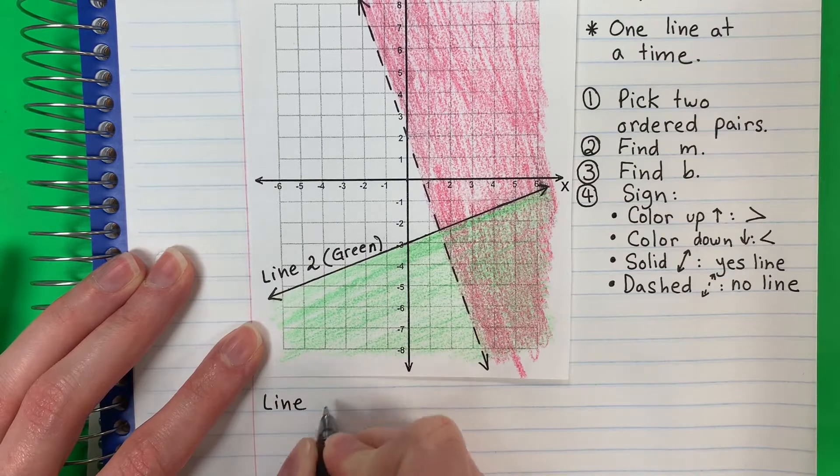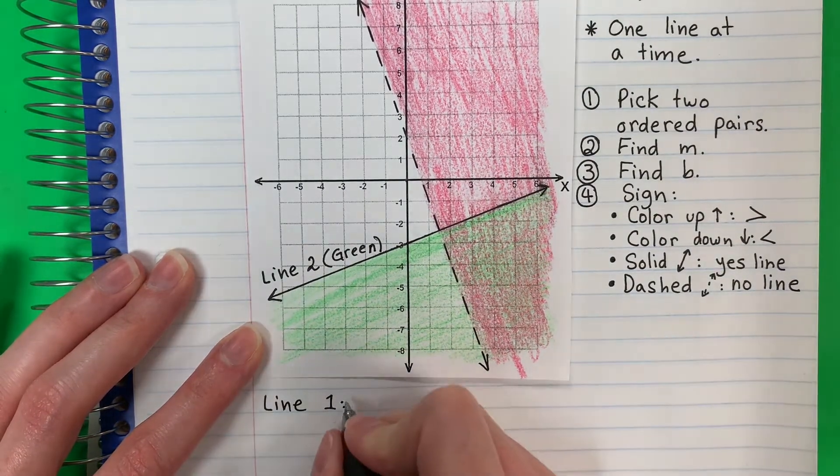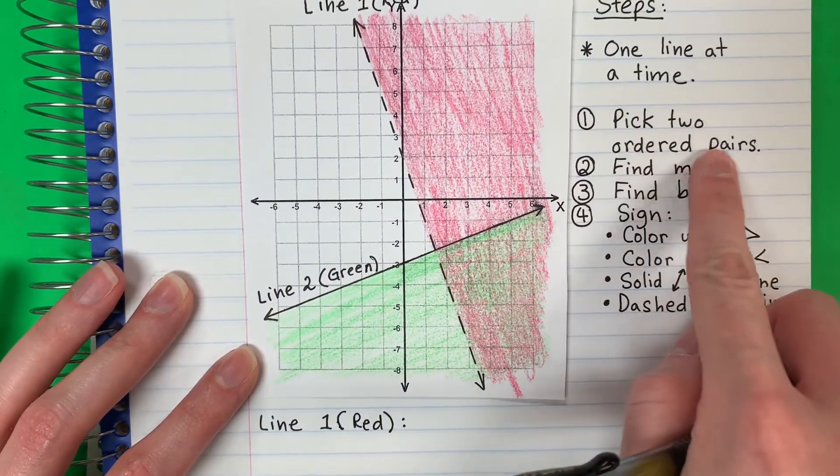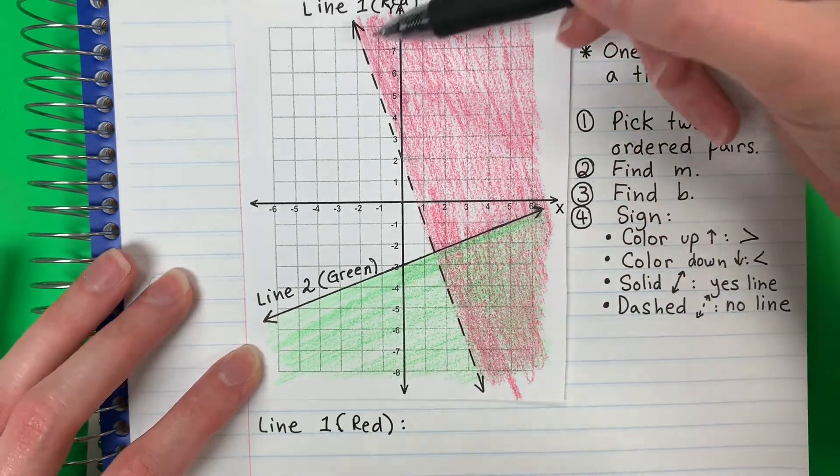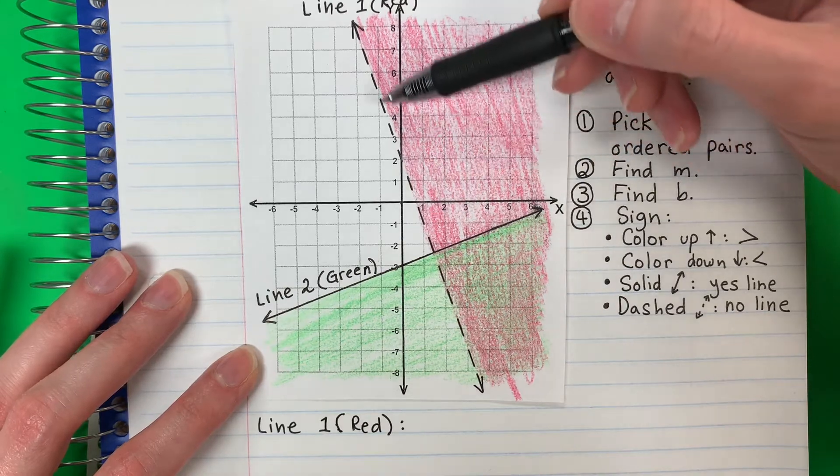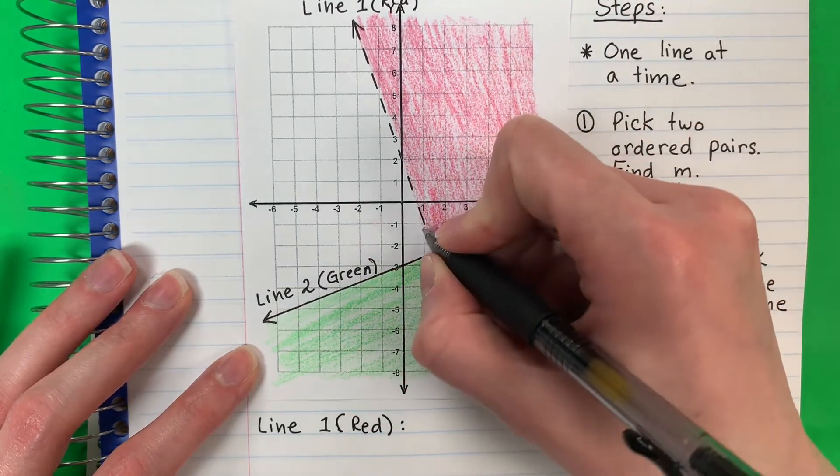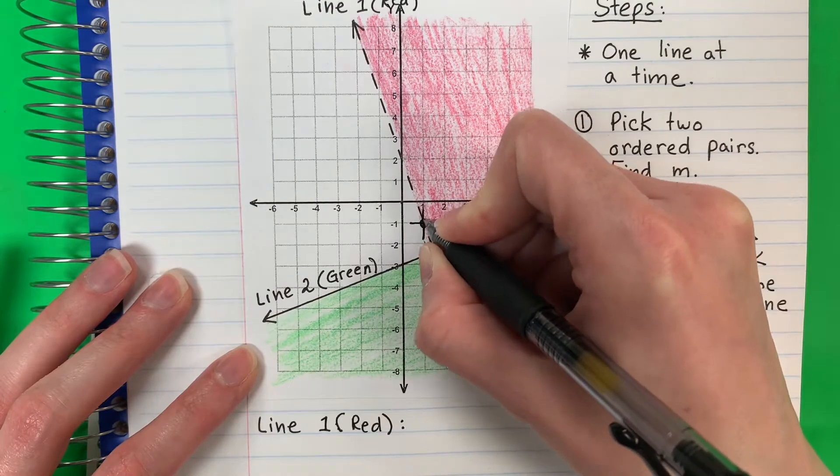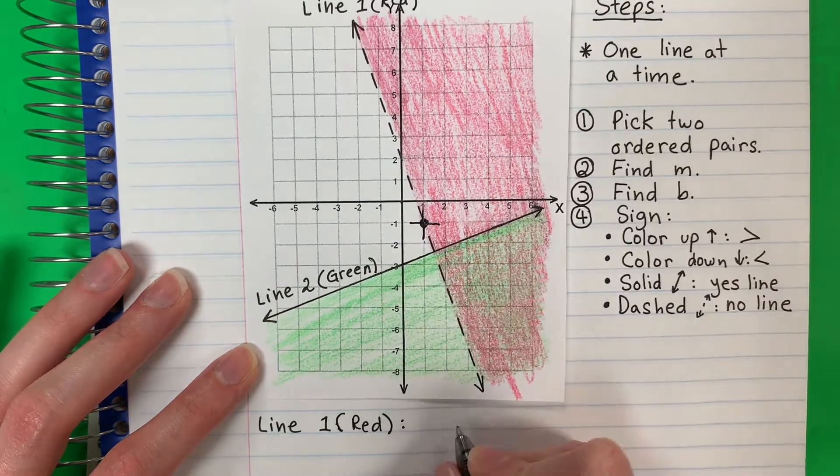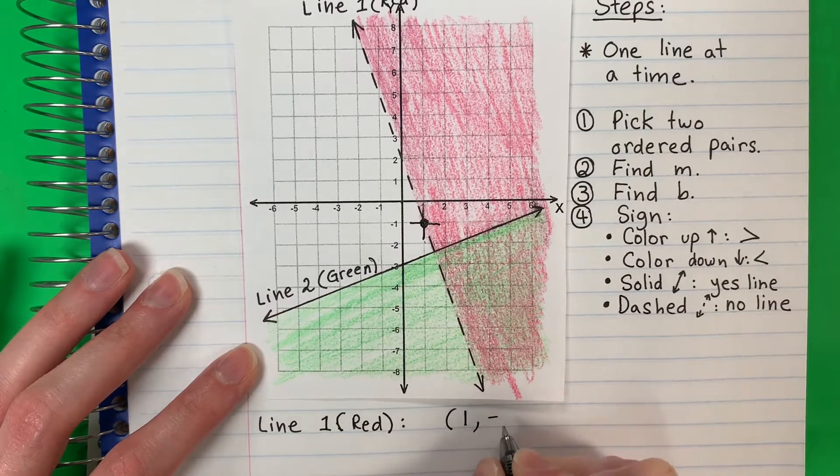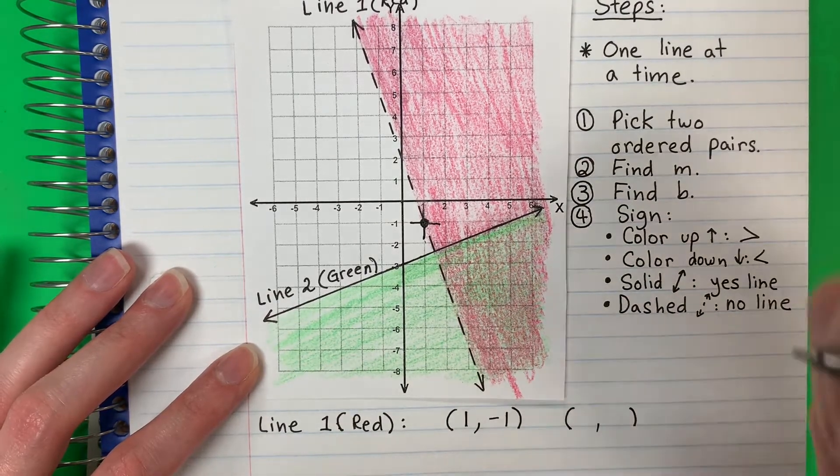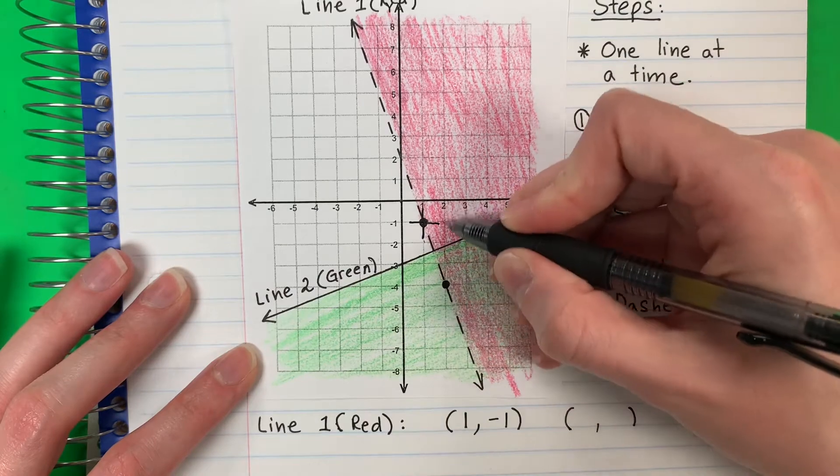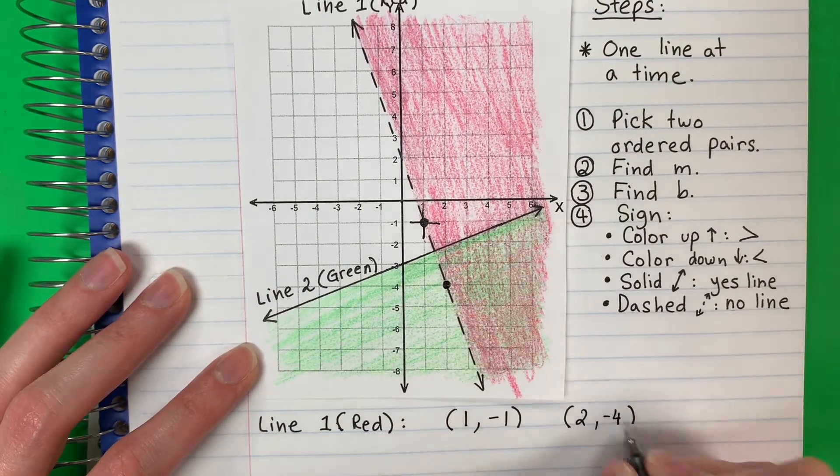Let's start with line one. That's red. So the very first thing I need to do is pick two ordered pairs, two points in a corner, dos puntos en una esquina. Do you see how it's in a corner? This is x is 1, y negative 1. And I need one more. I'm going to pick this one. This is 2, negative 4.